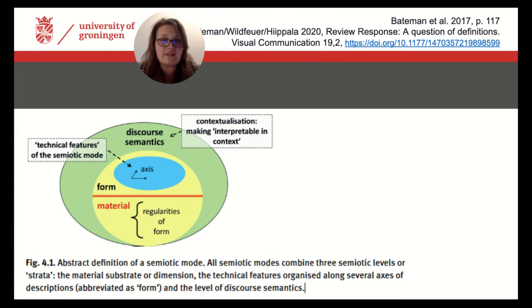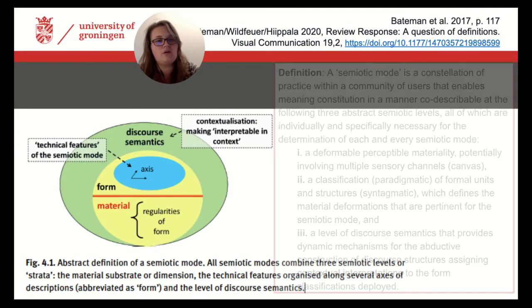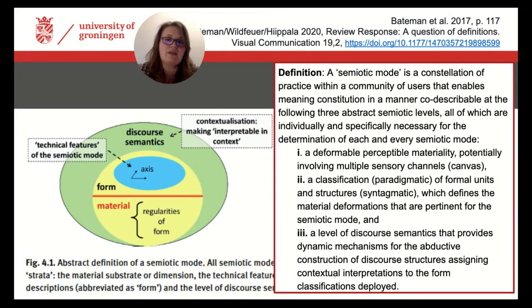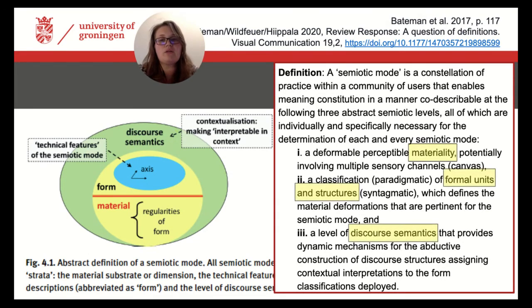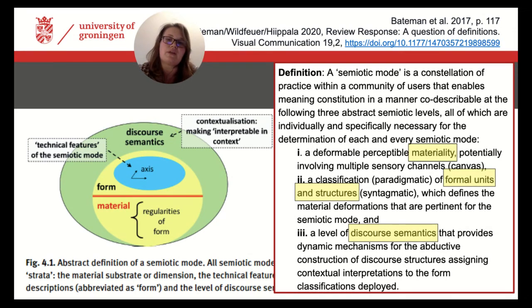In the textbook, we summarize the definition mainly with this graphical illustration and the caption underneath. In a more recent publication, we elaborate on the definition with additional text. The three most important key terms are: material or materiality, formal units and structures, and discourse semantics. While many other definitions of modes often only include the first two levels, it is the third level of discourse semantics which makes this definition more complex and at the same time unique.